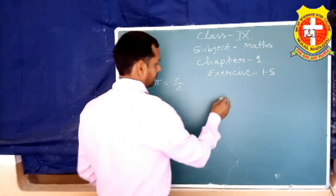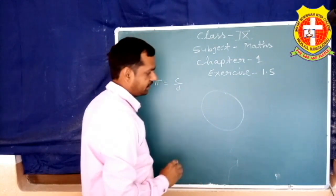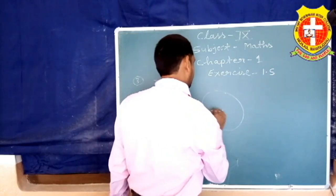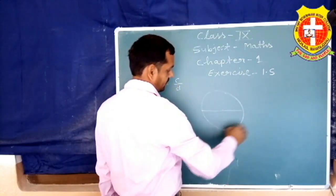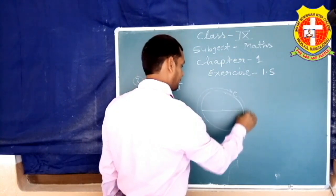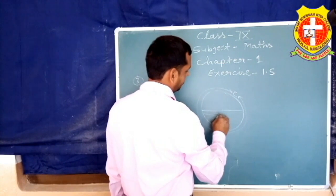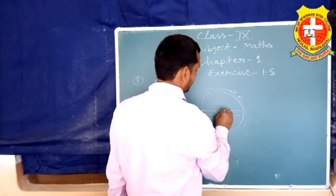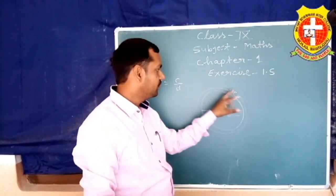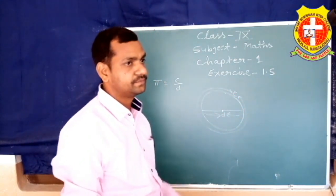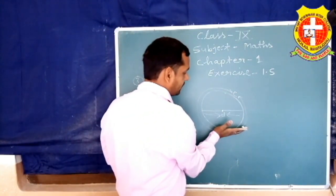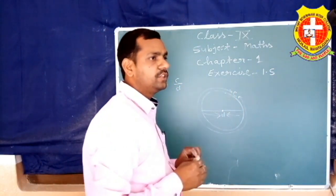अगर हम एक circle में एक center लें — यह एक व्यास है और यह C यानि circle का परिधि है। यह D यानि diameter हो गया। इस तरह से अगर यह व्यास है और यह पूरी परिधि है, तो यह चीजें मापी जा सकती हैं। इसे scale से माप सकते हैं।